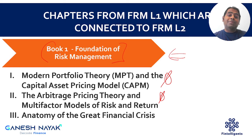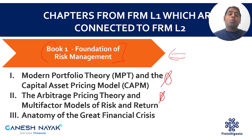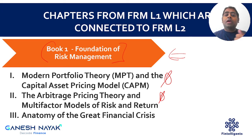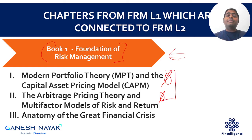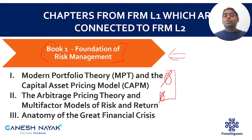There is an entire book on Investment Management and Risk Management in Level 2. The first and further chapters depend on what has been discussed in Capital Asset Pricing Model, Efficient Frontier, Fama-French, and Arbitrage Pricing Theory. So if you want to read that book properly in FRM Level 2, you should focus on these two chapters.